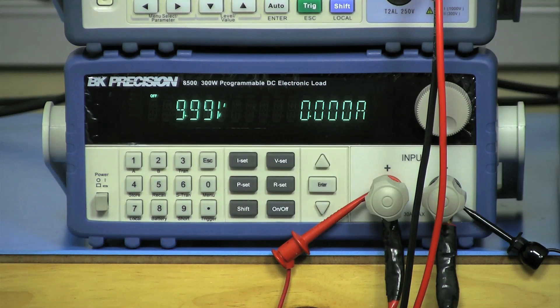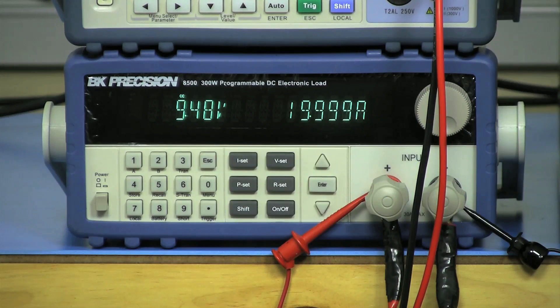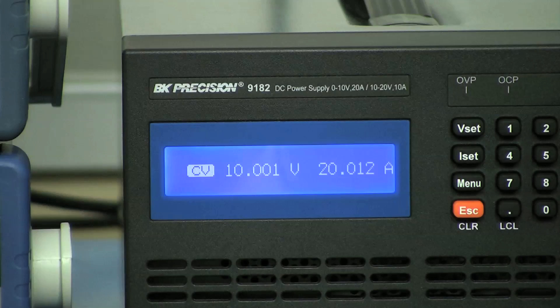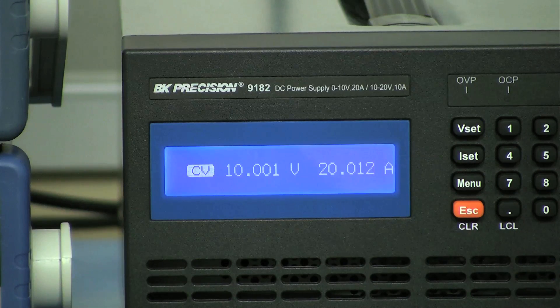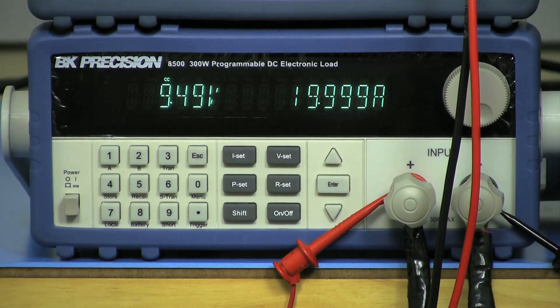Now as soon as I press the input on-off button on the 8500, it will draw 20 amps from the power supply. Observe the power supply to verify that 20 amp is coming out. And also do the same on the load's display.